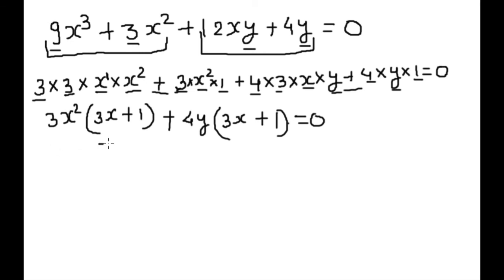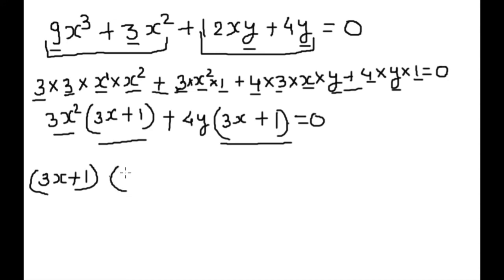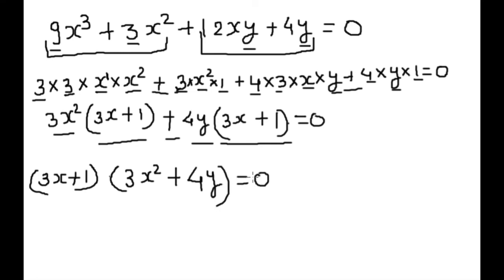Now the common term across both groups is 3x plus 1. We write 3x plus 1 out, and the remaining bracket is 3x squared plus 4y, equal to 0. This is the complete group factorization of this polynomial function.